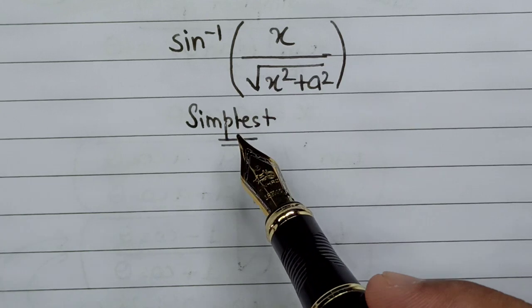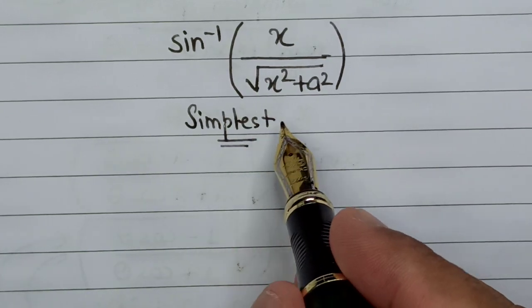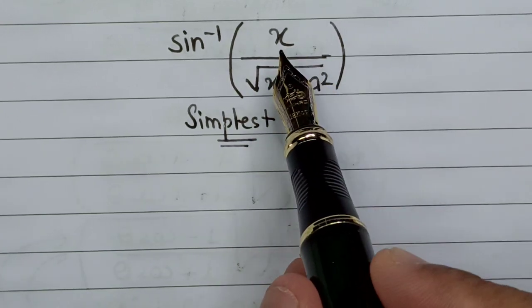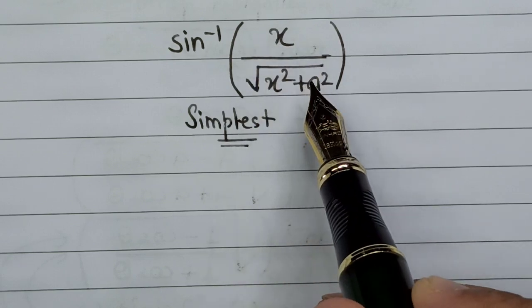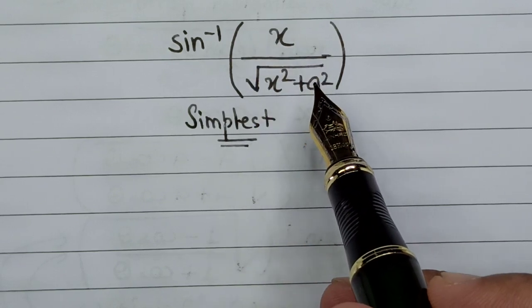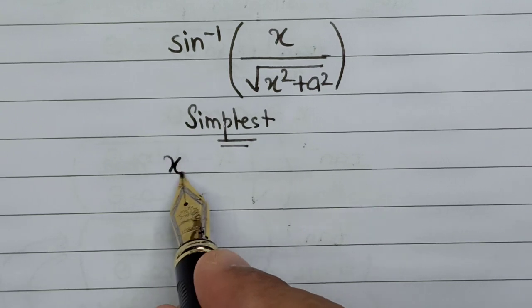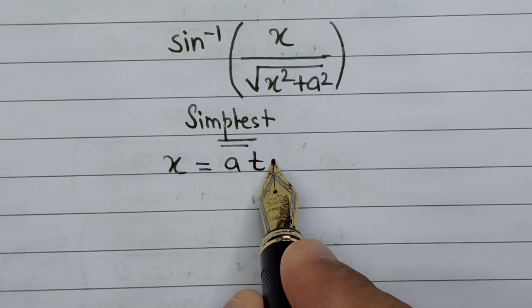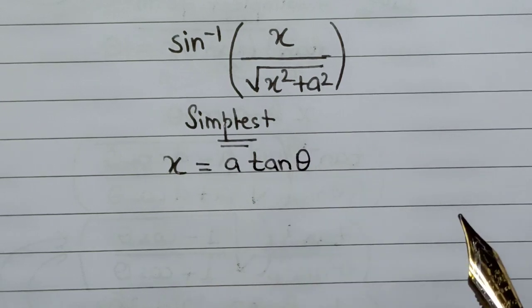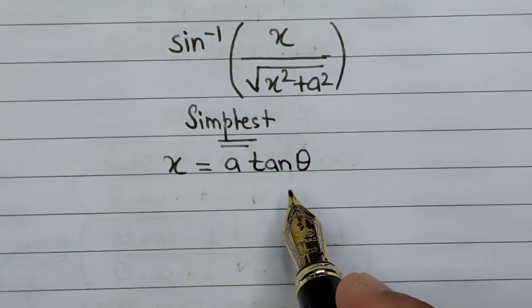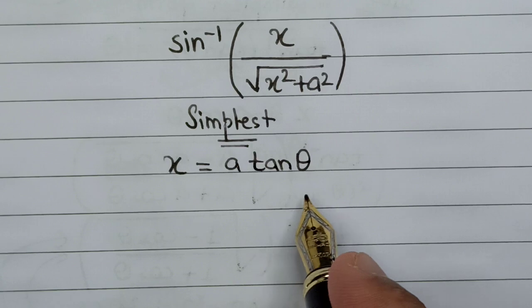What we can do is first substitute the value of x so that this particular part of the fraction gets cancelled out or reduced. The substitution I will be making is x equals a tan theta.